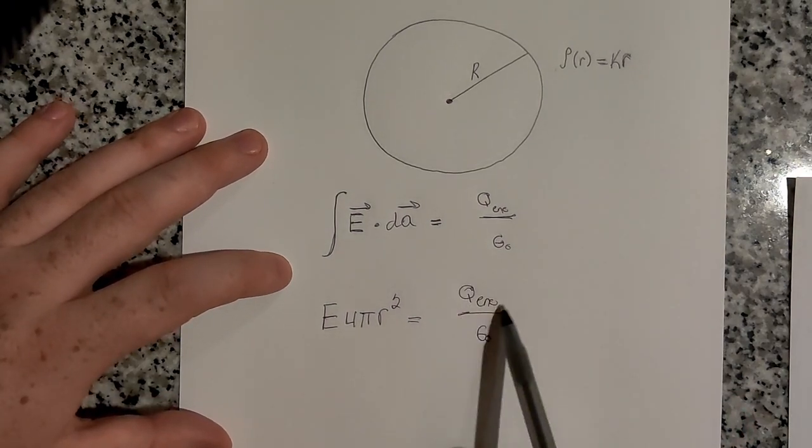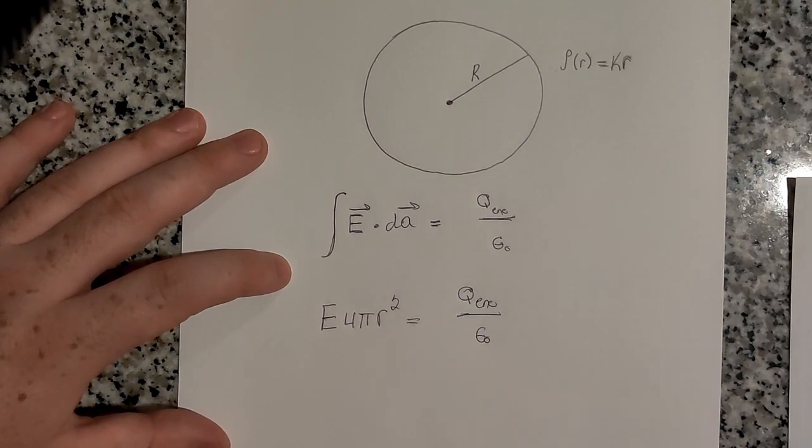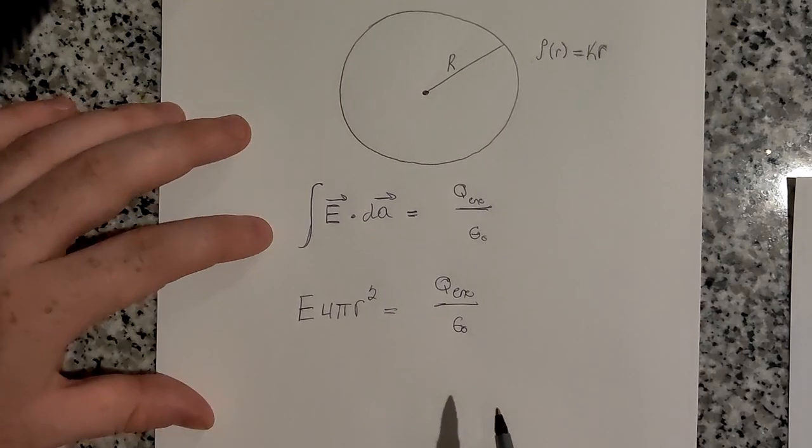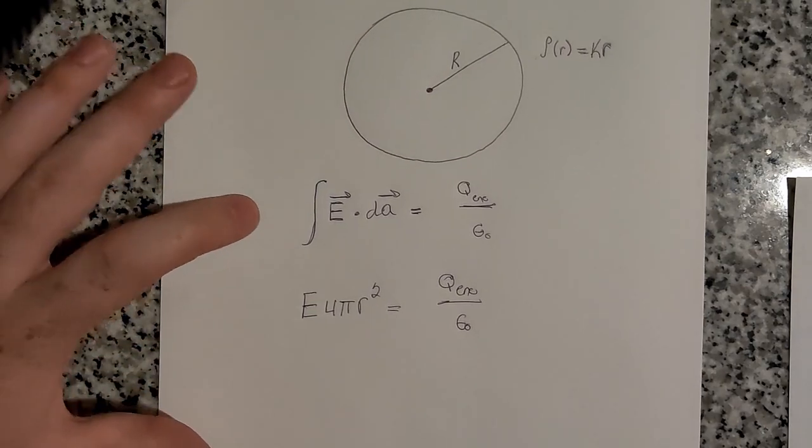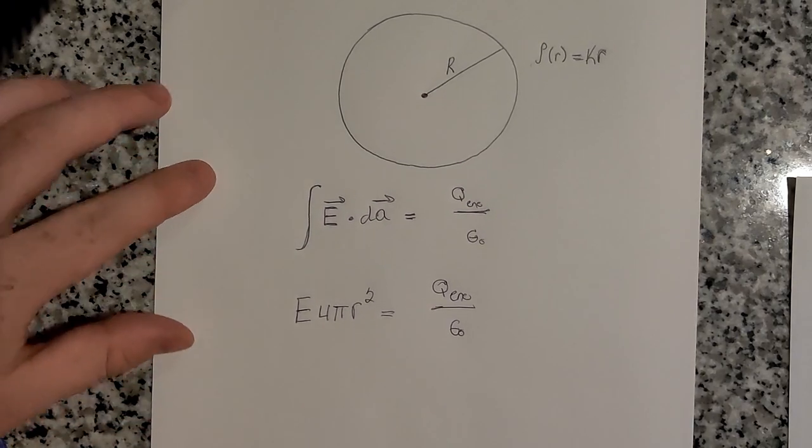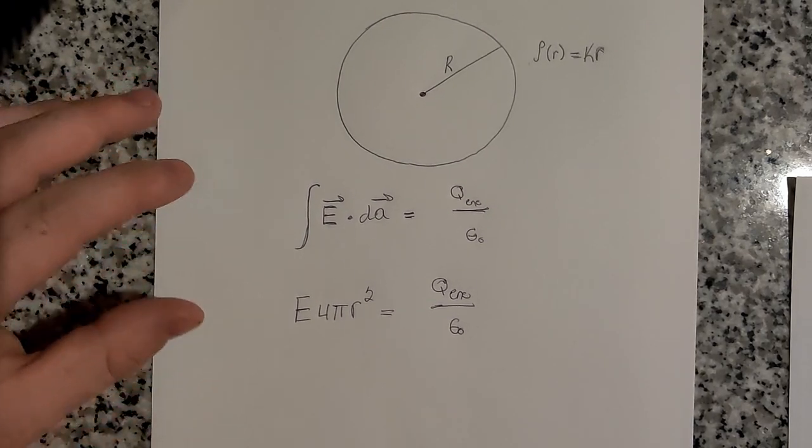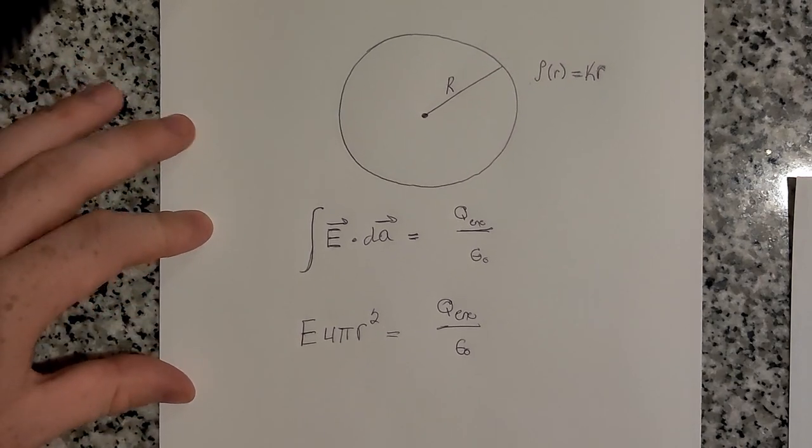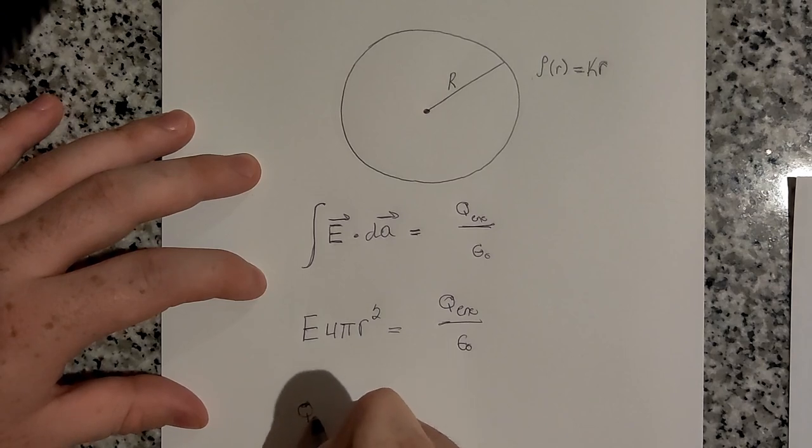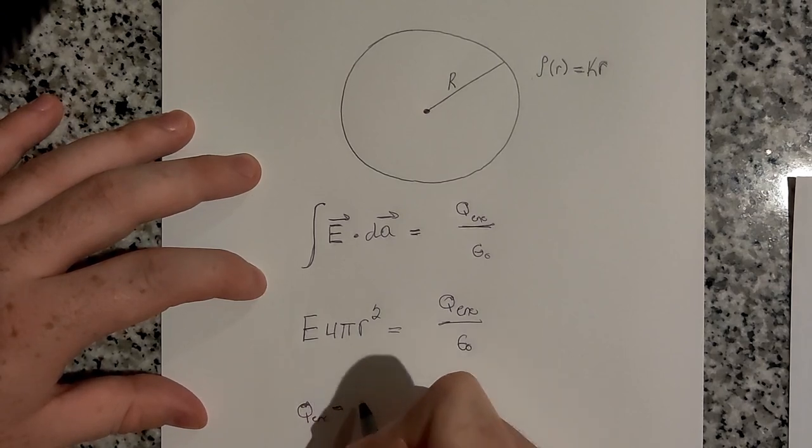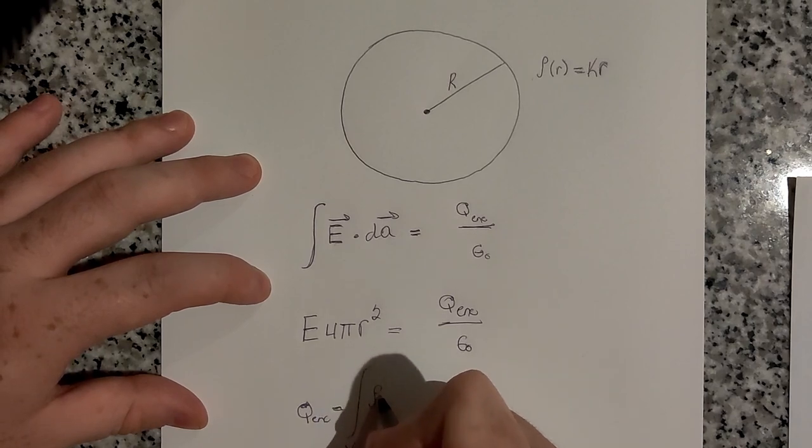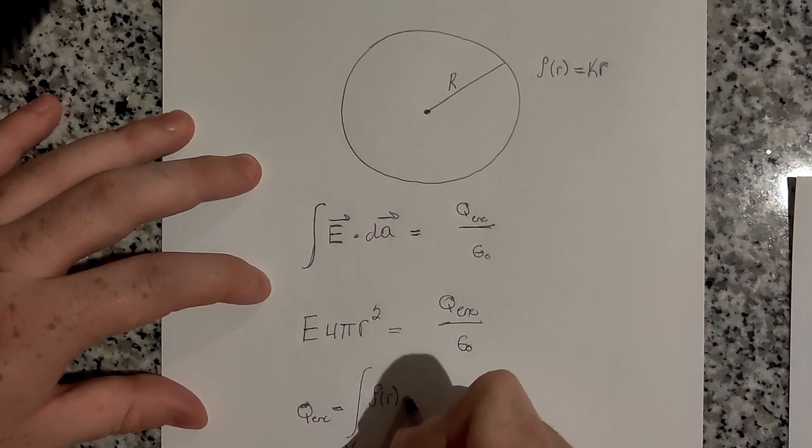Now we've got to find the charge enclosed in our Gaussian surface. That's going to be a little bit trickier because we can't just do a proportion or fraction like we can when the charge density is uniform. We have to actually integrate our charge density over the volume. So q enclosed is equal to the integral of ρ(r) dV.